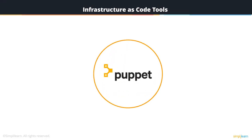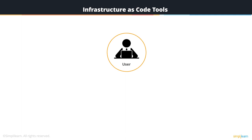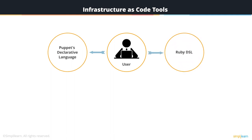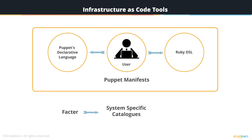Puppet is designed to manage the configuration of Unix-like and Microsoft Windows systems declaratively. The user describes system resources and their respective state using Puppet's declarative language or Ruby DSL, stored in files called Puppet Manifests. Puppet discovers system information via a utility called Facter and compiles the Manifests into a system-specific catalog containing resources and resource dependencies, which is then applied against the target system.